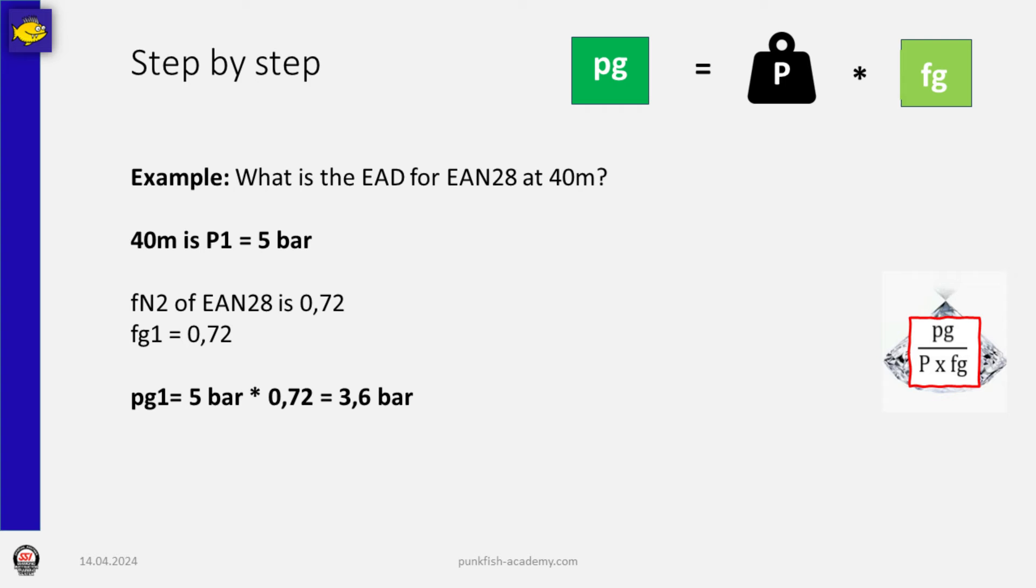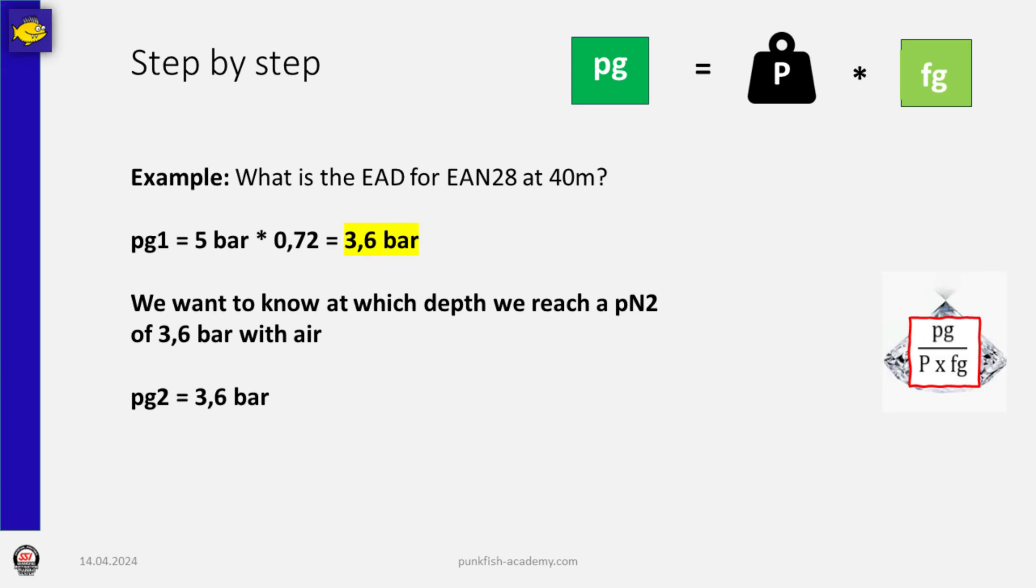So for our example, we now want to find the equivalent air depth for our nitrox 28 for 40 meters. That means 40 meters is our first pressure, pressure 1, and this pressure is 5 bar. At 40 meters we have 5 bar. Now to find the pressure of nitrogen with this nitrox at 40 meters, we just have to multiply the depth 5 bar with 0.72 which is our fraction of nitrogen, and we get to 3.6 bar.